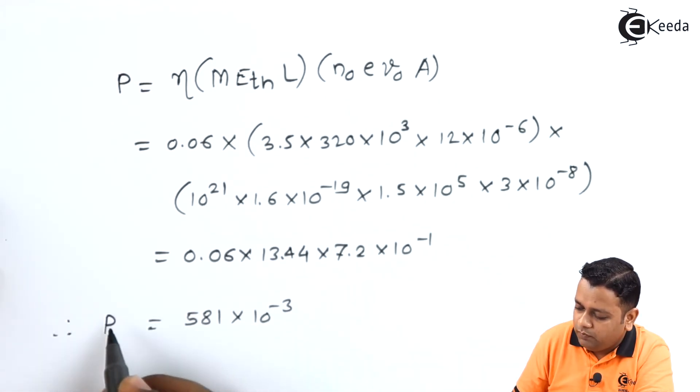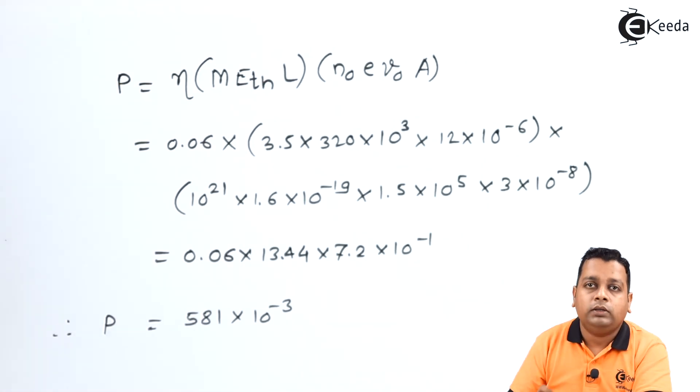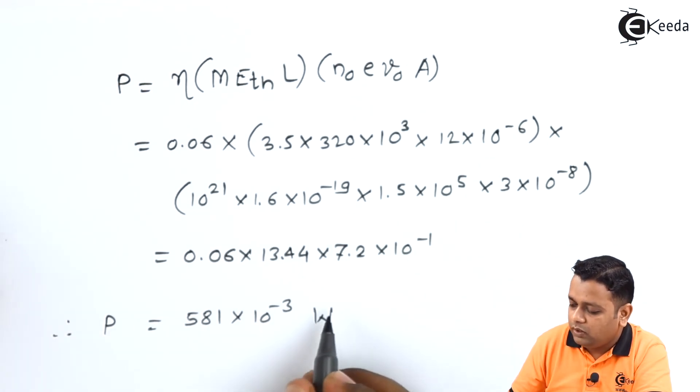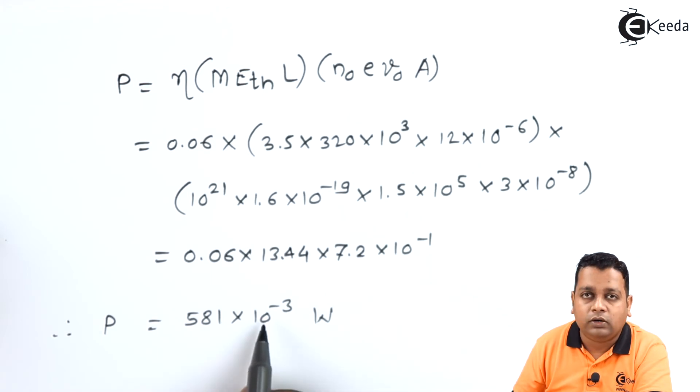So this simplified multiplication further gives us the value 581 into 10 raised to power minus 3. So this is the value obtained for the output power. The SI system of units gives the measurement in terms of watts. Therefore I express P is equal to 581 into 10 raised to power minus 3 watts.